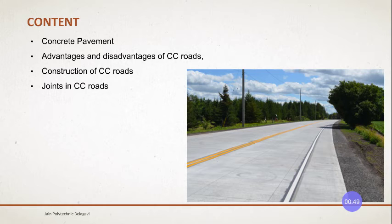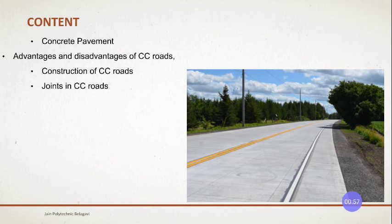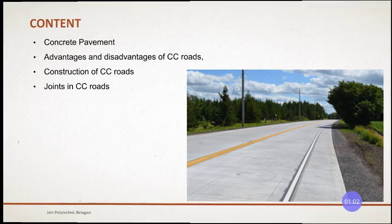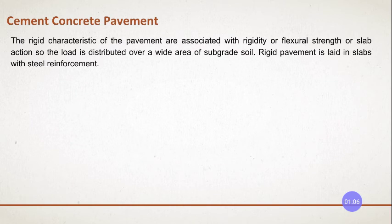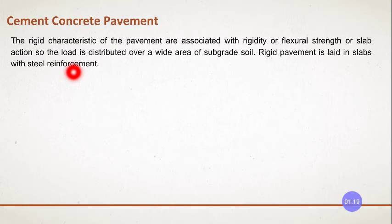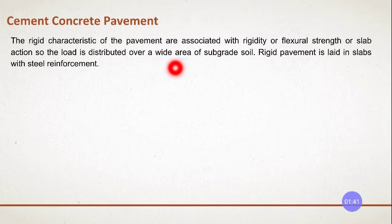The construction of cement concrete road is different with respect to flexible pavements because it comes under rigid pavement. The rigid characteristics of pavements are associated with rigid or flexural strength or slab action. We call it rigid because it has rigid characteristics and flexural strength which resists bending as well as deflections. The load is distributed over a wider area of subsoil, and rigid pavements are laid with slabs with steel reinforcement — most commonly RCC concrete.